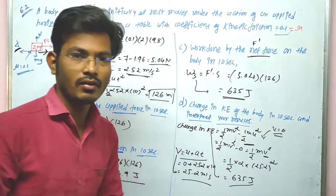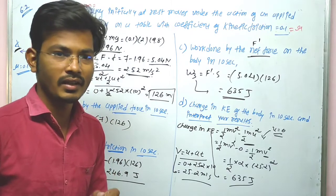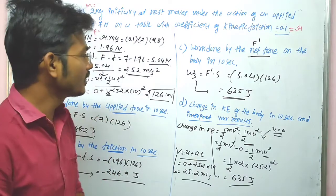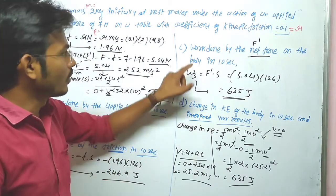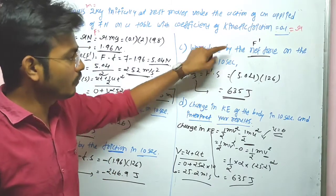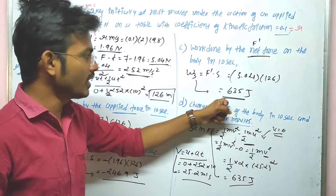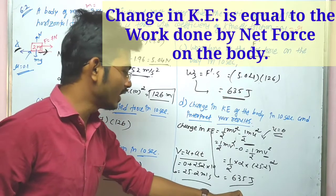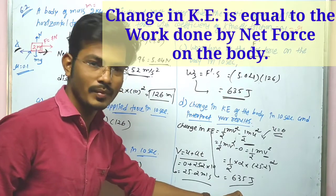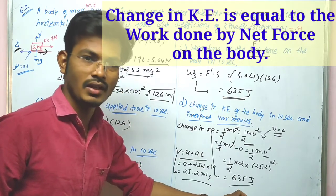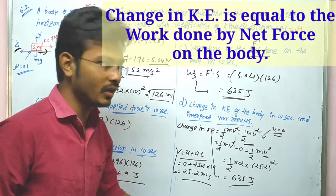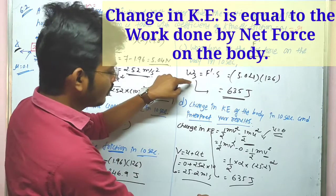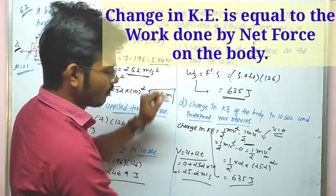Interpreting the results: the work done by the net force and the change in kinetic energy are both equal to 635 J, which confirms the work-energy theorem — both values are the same.